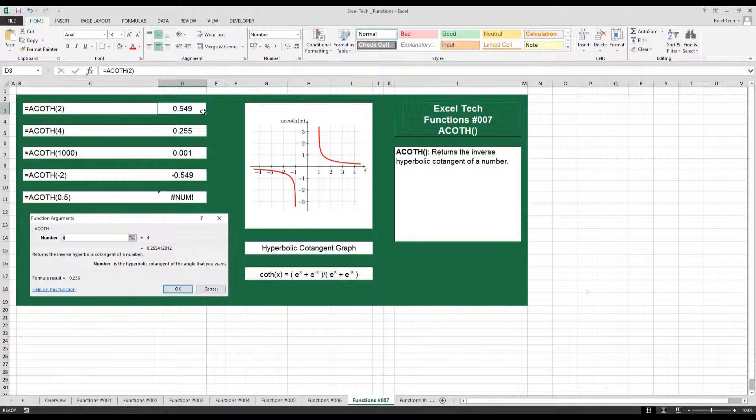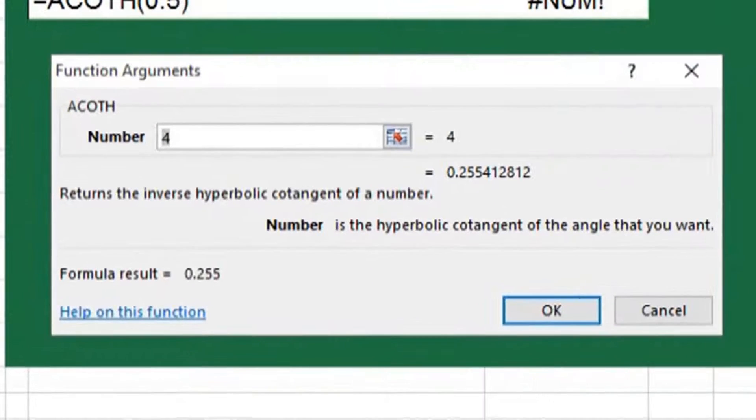Welcome to Excel Tech. Today we have functions episode 7 and we're going to cover the ACOTH function. Excel's description of this is it returns the inverse hyperbolic cotangent of a number.